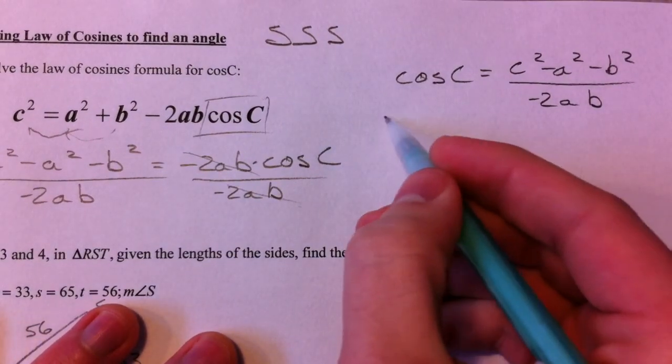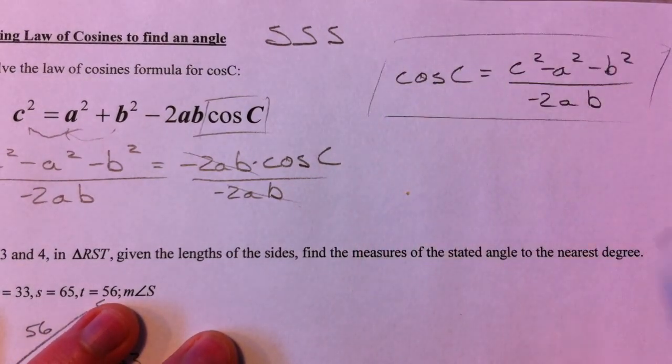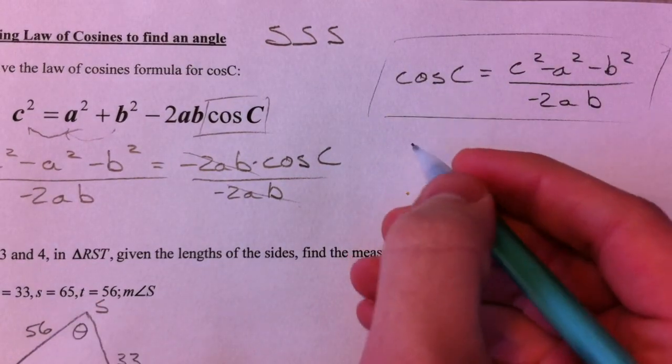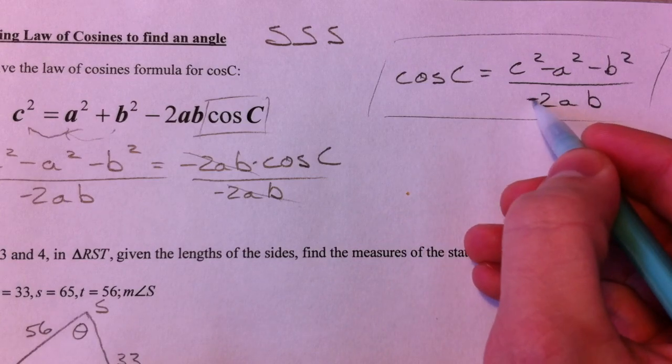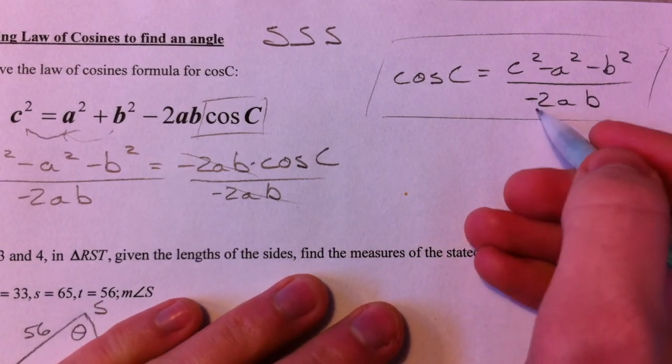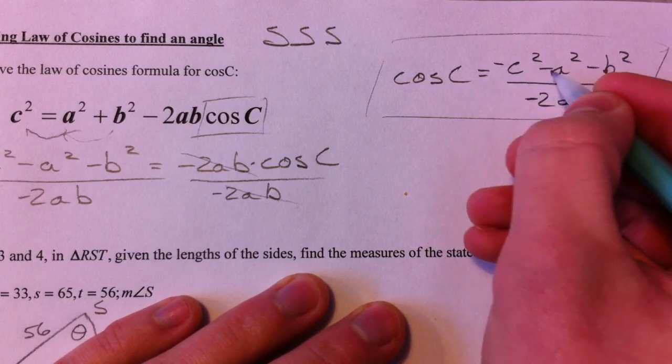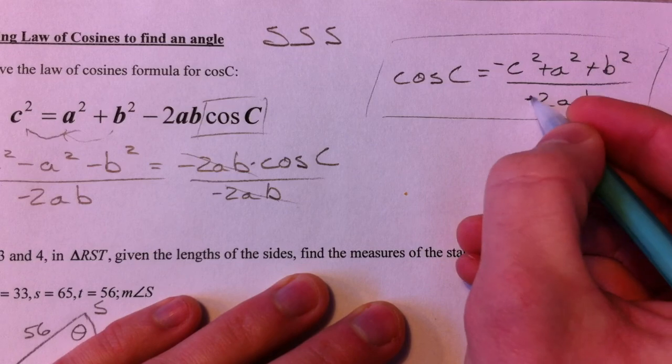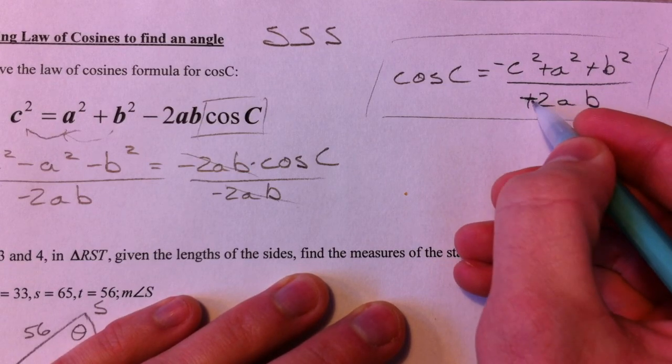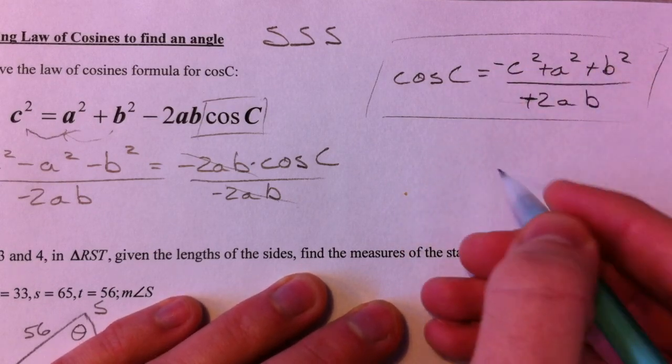And we get the cosine of C equals c² minus a² minus b² divided by negative 2, divided by negative 2 times a times b. And so there's your version of the cosine solved for. However,